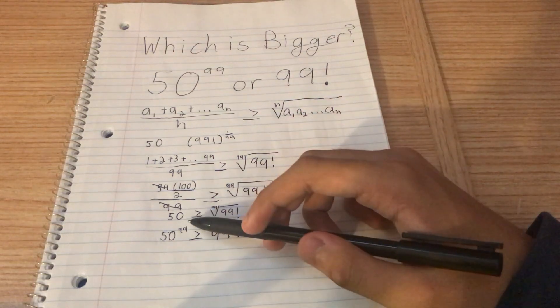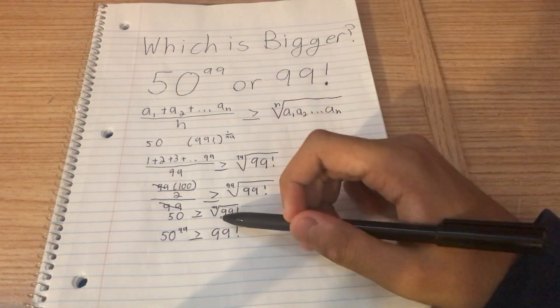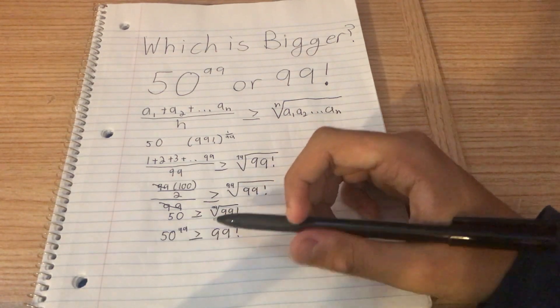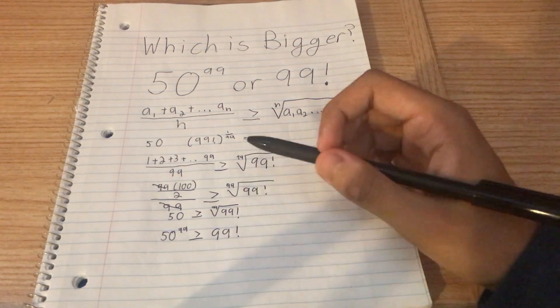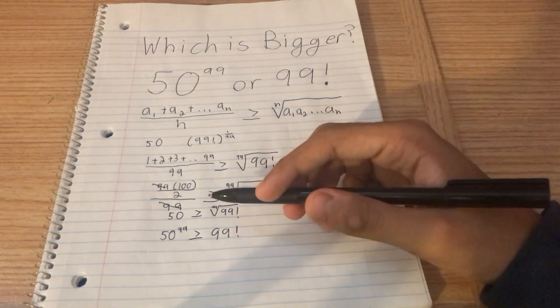Using the AM-GM inequality, we have almost proved that 50 to the power of 99 is greater, is the greater of the two terms. However, keep in mind, this is saying that it's greater than or equal to 99 factorial. So there is a possibility that these two are the exact same in value, right?